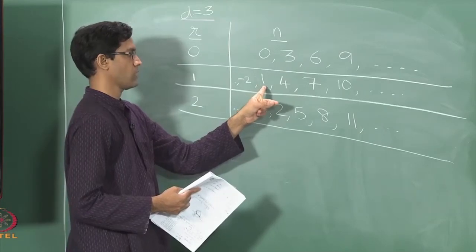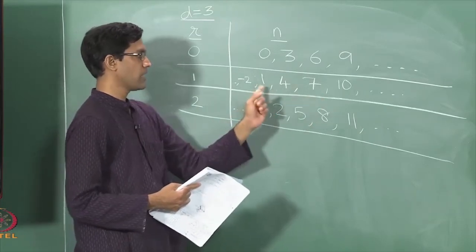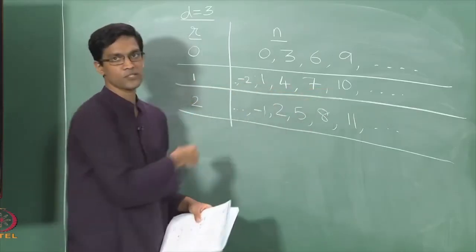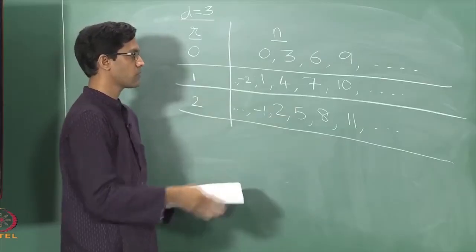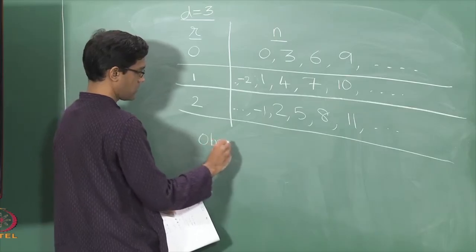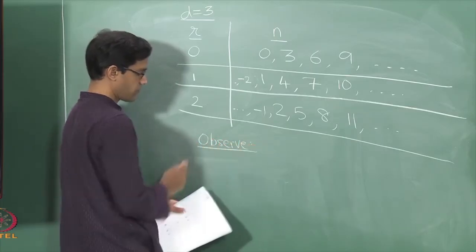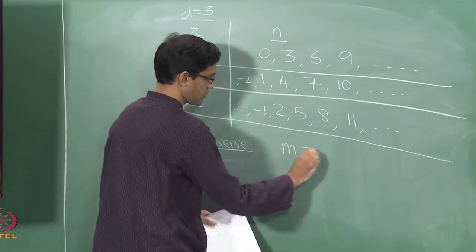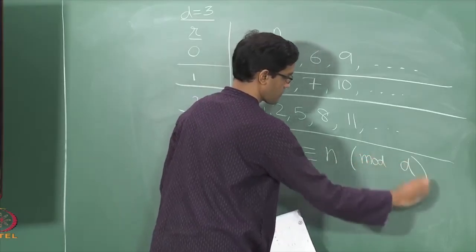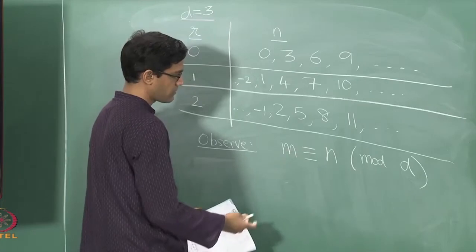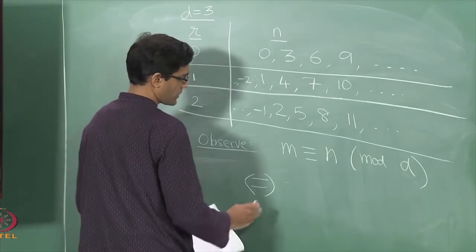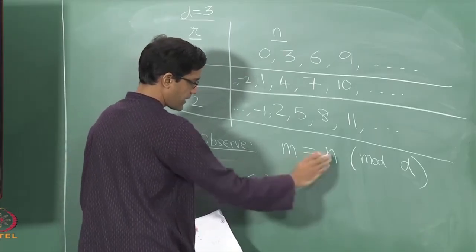There is a very easy way of generating these numbers: once you know one of them, say 1, you get the rest by adding multiples of 3 — add 3 to get 4, add 3 again to get 7, subtract 3 to go the other way, and so on. So all these numbers differ from each other by multiples of 3. This leads to an easy observation: if m and n are congruent to each other mod d, this is the same thing as saying that d divides their difference.